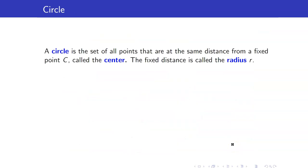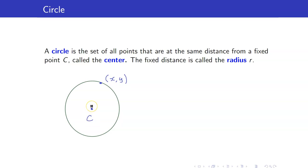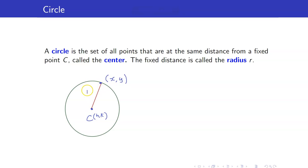You are all familiar with the definition of a circle. A circle is a set of all points that are at the same distance from a fixed point C called the center. That fixed distance is called the radius. Suppose this is our center C and this is a point on your circle. Let us derive the formula for the equation of a circle. Suppose that our center is the point H, K.